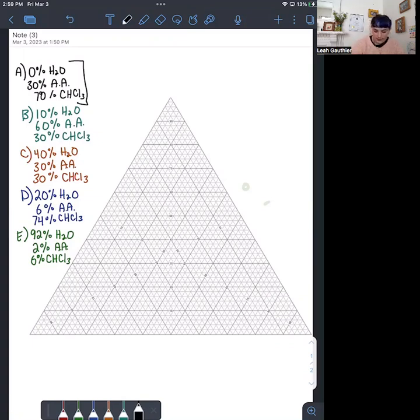Every point on this graph describes the percentage by weight of each of those three components in a mixture. And so the way that you'll be plotting your data is using this diagram.